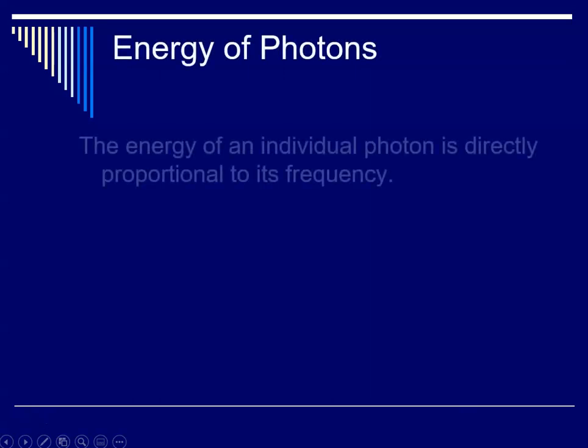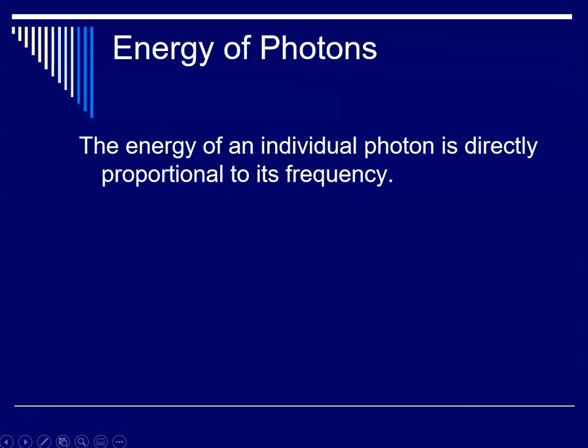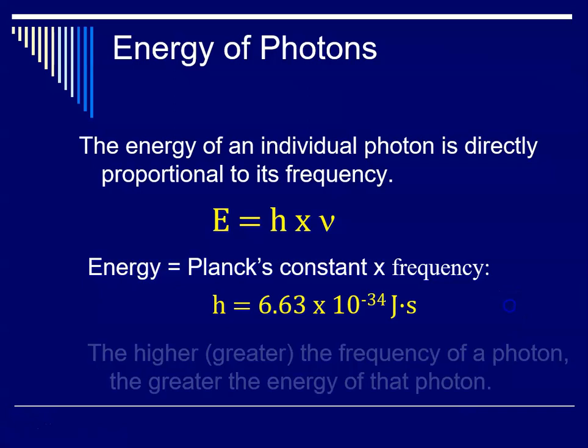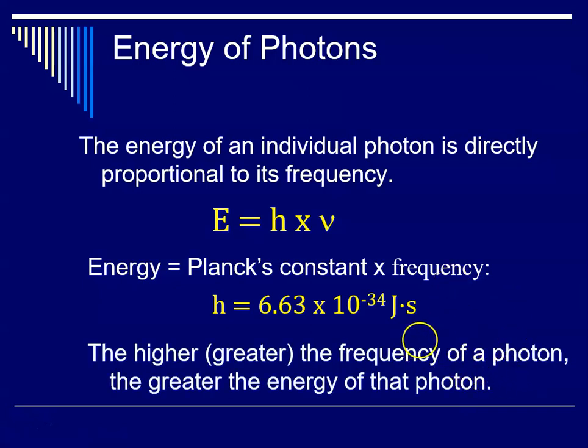So when we're talking about the energy of photons, the energy of an individual photon is directly proportional to its frequency, according to this equation, where E is the energy, h is a constant, and it's called Planck's constant. And the Greek letter nu stands for frequency. So energy is equal to Planck's constant times frequency. Planck's constant is equal to 6.63 times 10 to the negative 34 joules times seconds. And what that means is the greater the frequency a photon has, the greater the energy, or the lower the frequency, the lower the energy. So directly related.